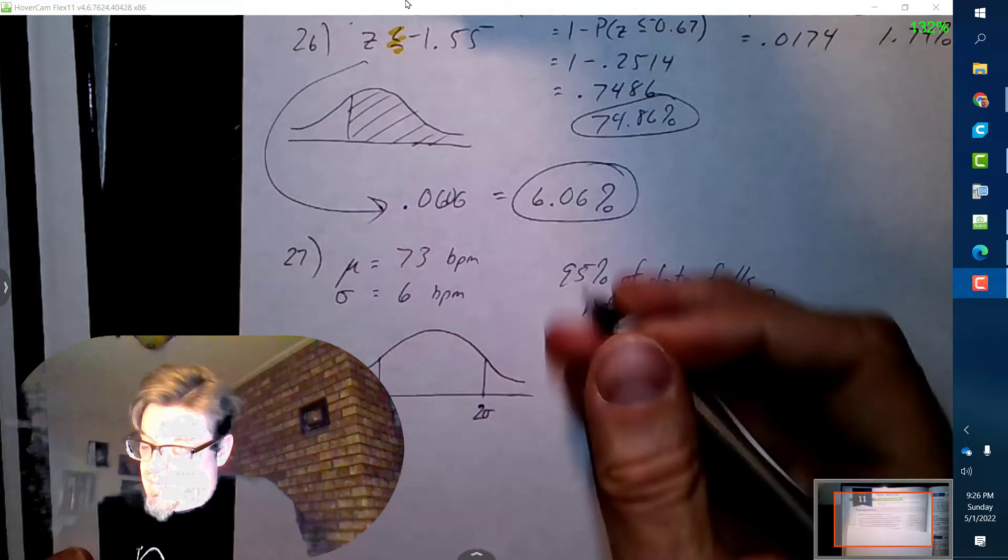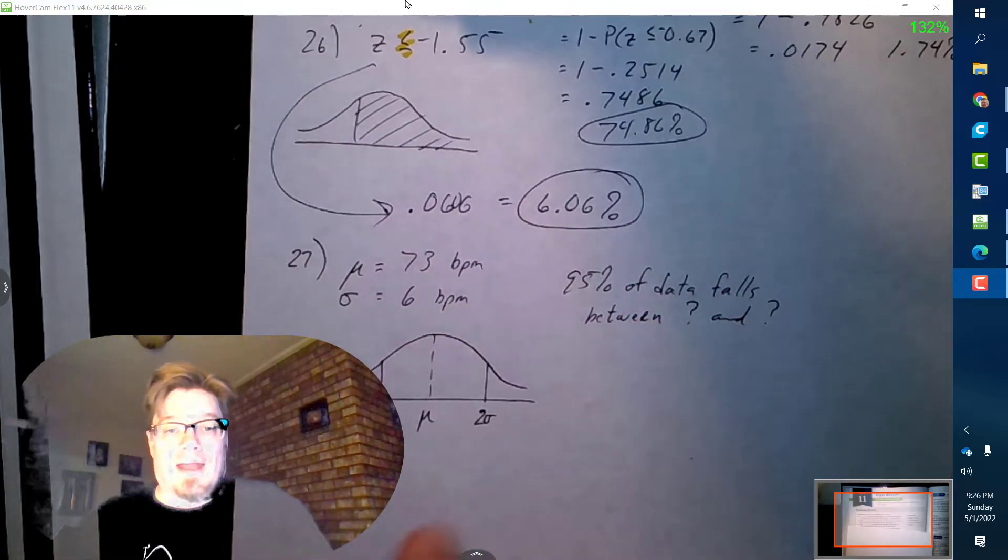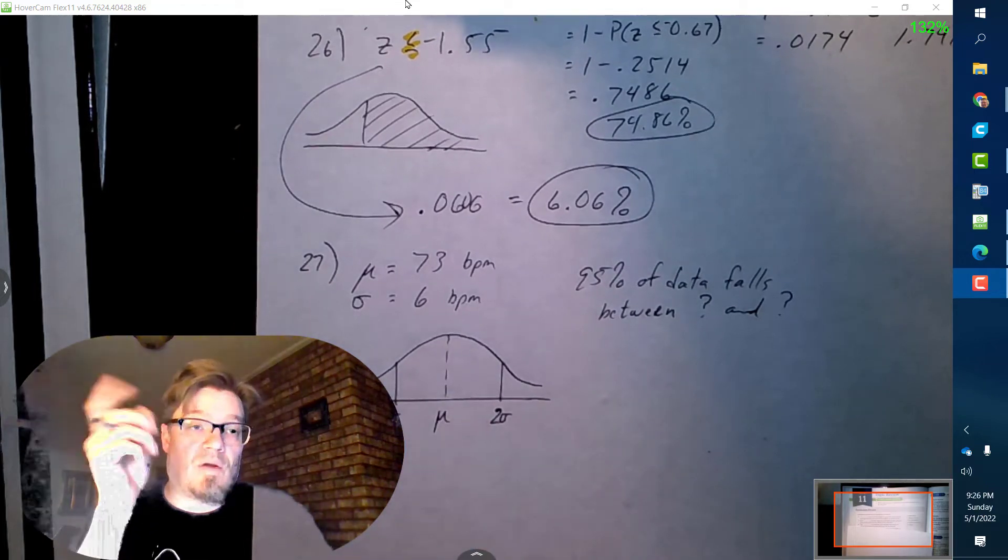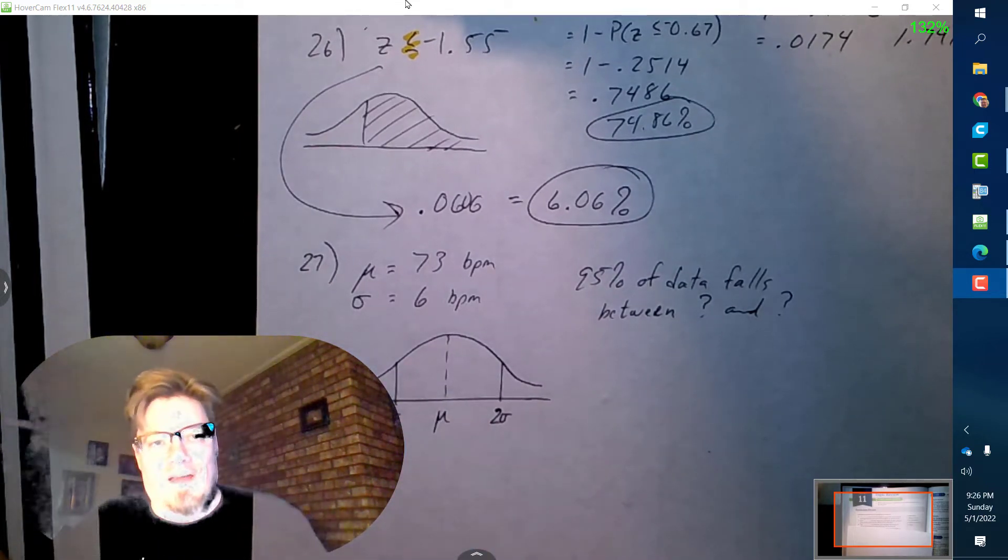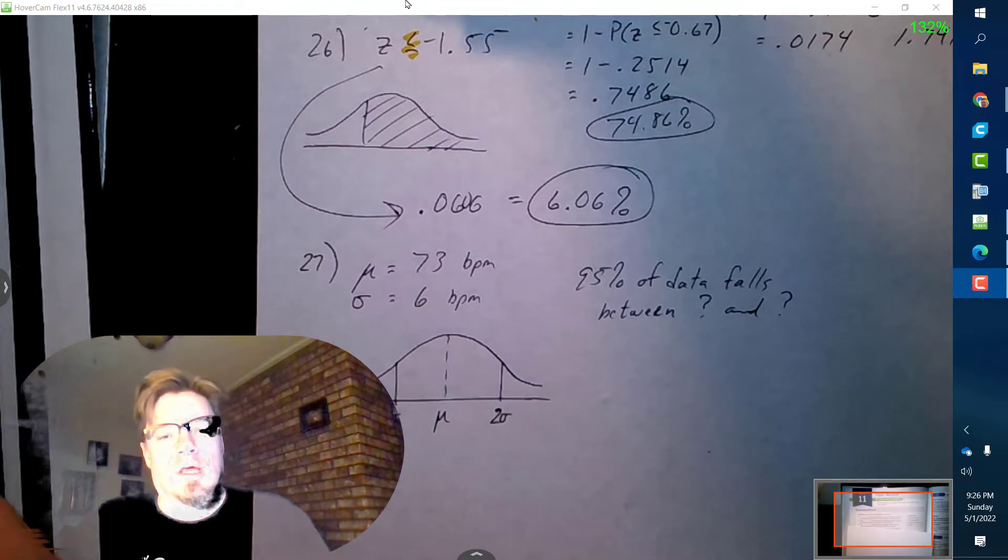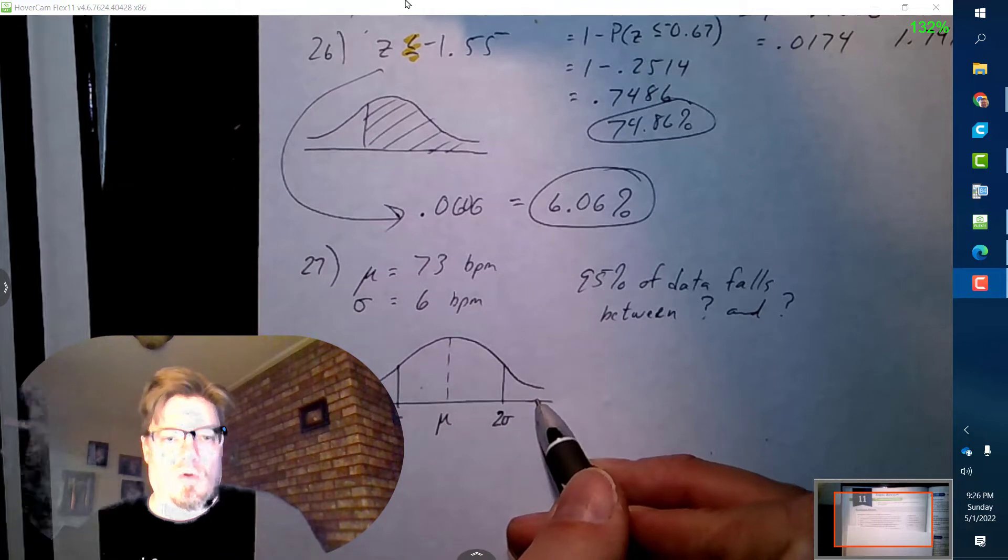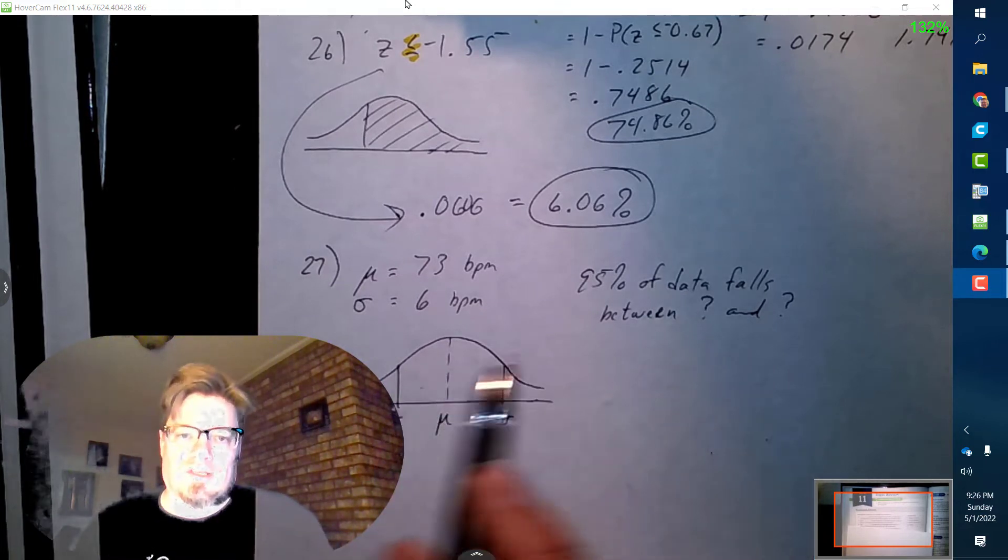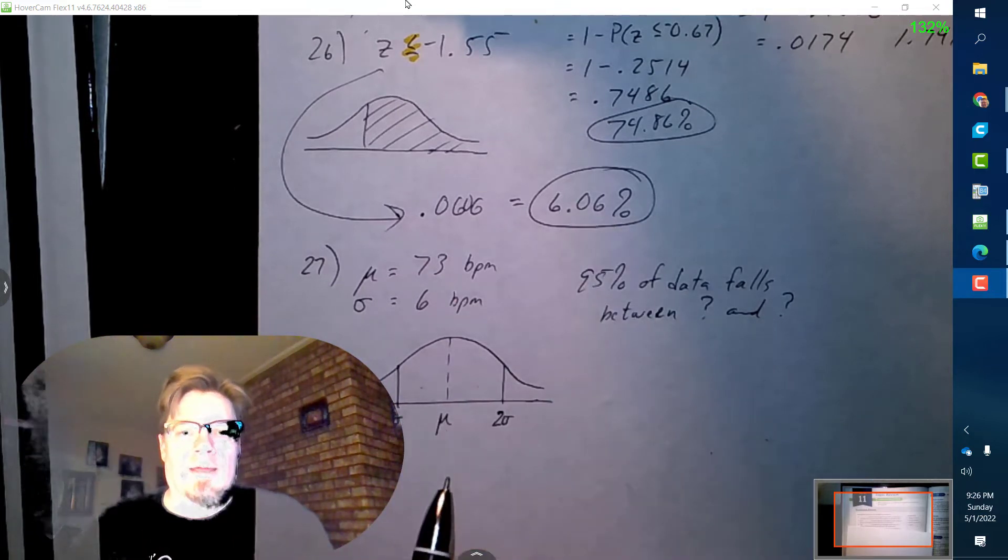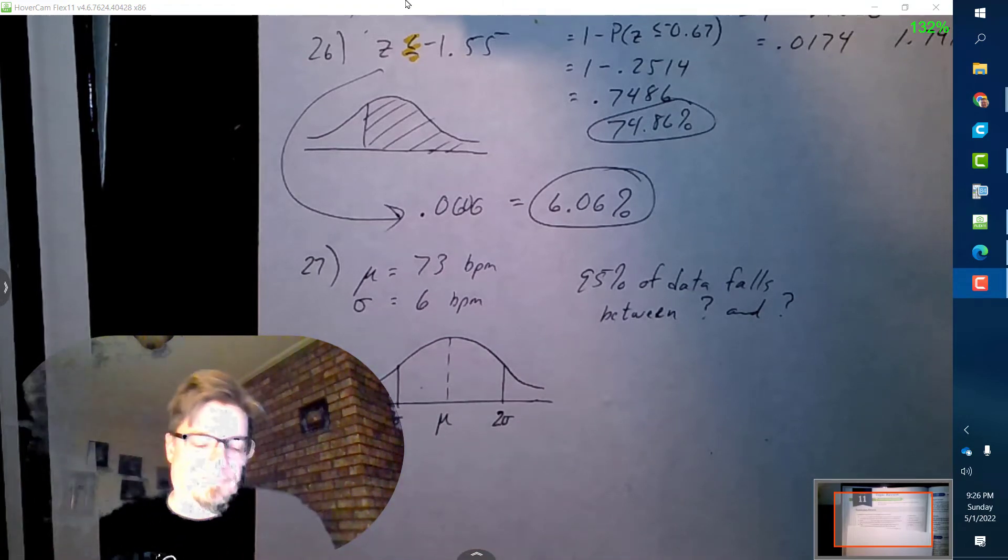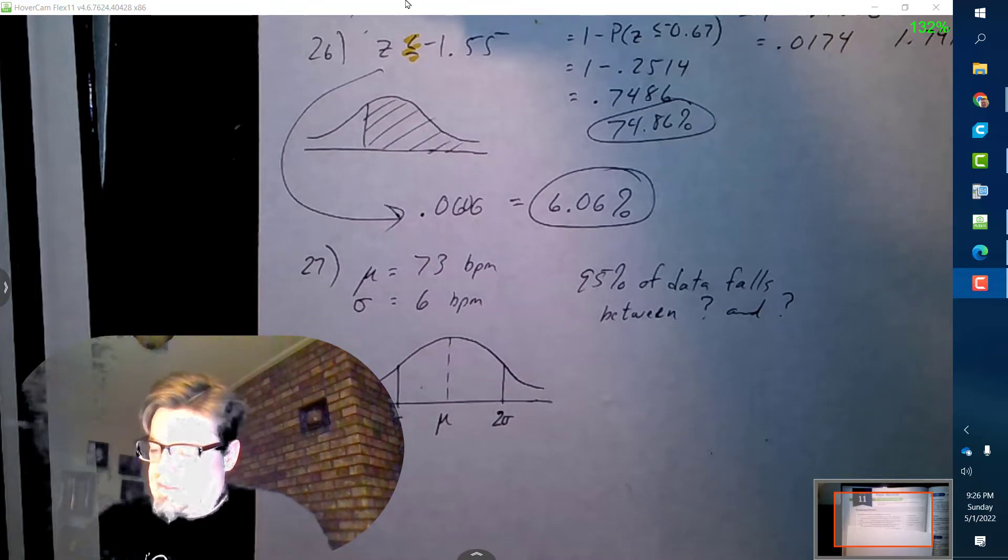Okay, that is 95 percent. This is called the empirical rule. I will let you know, on the test it will not be 95 percent, it will be another percentage. So keep in mind that the empirical rule and these percentages are going to be very important. I'm going to ask you a few questions on this, not just one. So just write that on your note card - the empirical rule is very important.